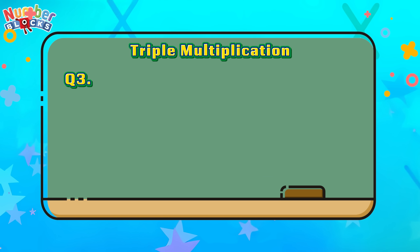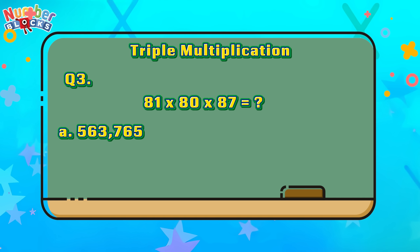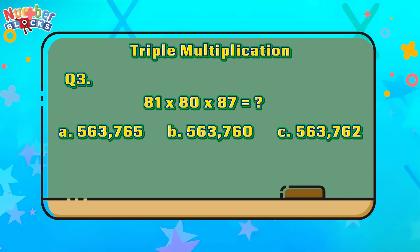Question number 3: 81 times 80 times 87 is equals to. Is it letter B, 563,760? Or letter C, 563,762? If your answer is letter B, then you're right — 563,760!